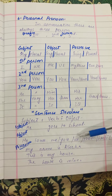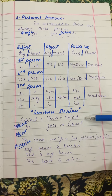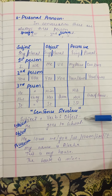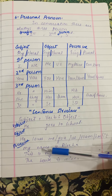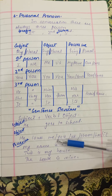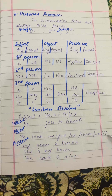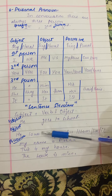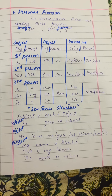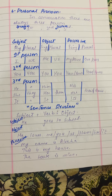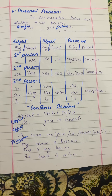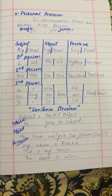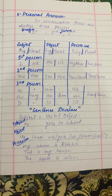Here are some examples: 'He goes to school.' Objects: 'He loves me,' 'you,' 'them,' 'her,' 'it.' For possession: 'My name is Aliha,' 'This is my house,' 'The house is mine.'